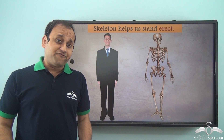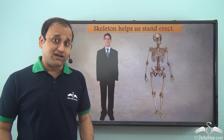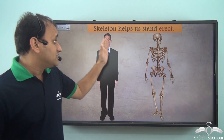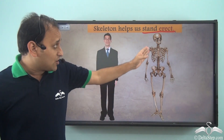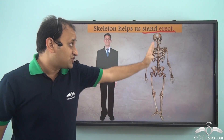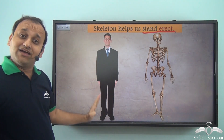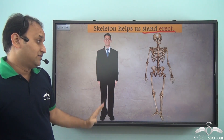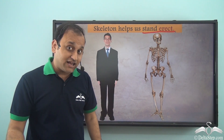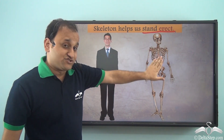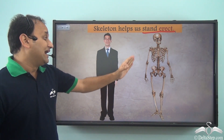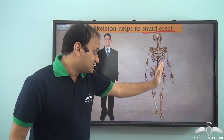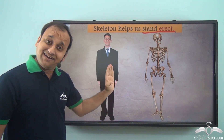Another important function of the skeleton is that it helps us to stand erect. Because of this skeleton structure, we are able to stand erect. As you saw at the start of the lecture, if there is no skeletal system, we would be nothing more than a shapeless blob. So it is the skeletal system that helps us stand erect.